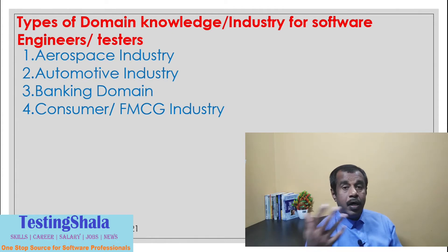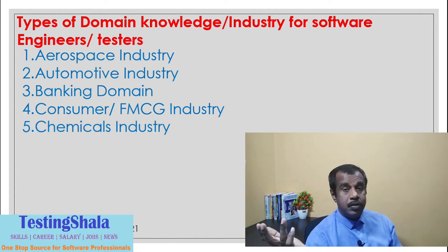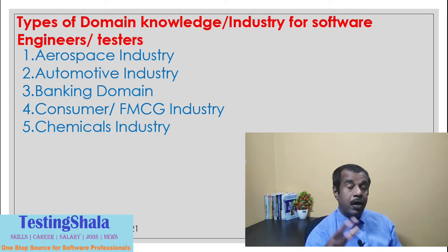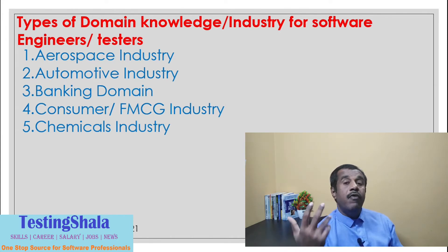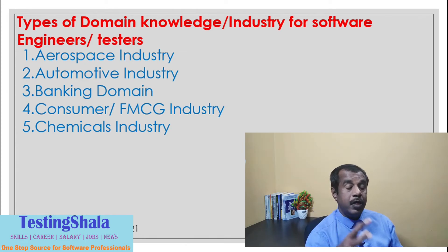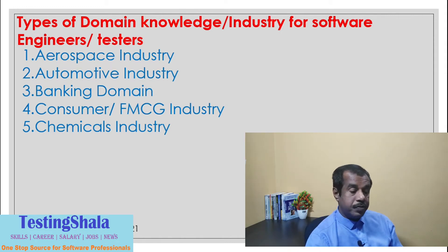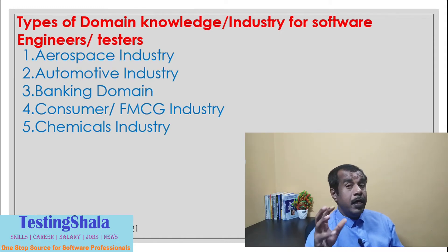The fifth is the chemical industry. A lot of fertilizers, drugs, and chemicals are required in this space. Many industries work in this area and also require a lot of software to get things done faster. Someone working here should have a good understanding of the chemical industry in order to support projects in that area.